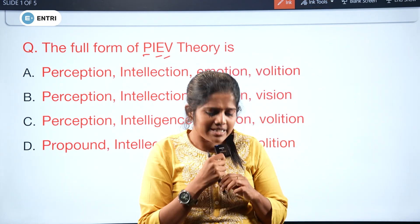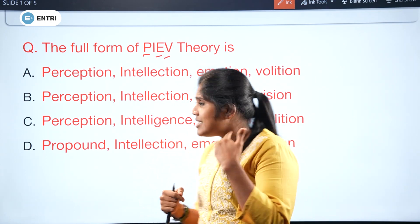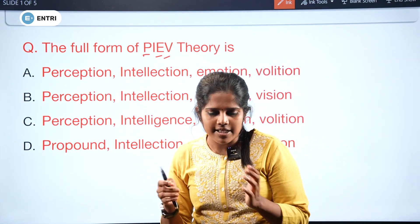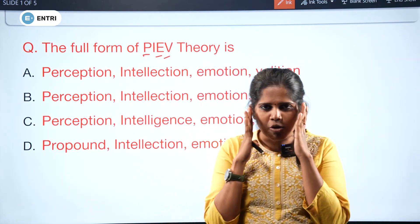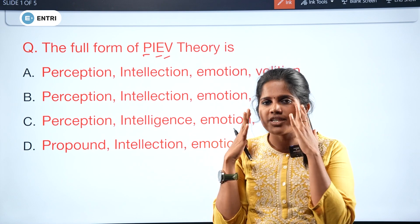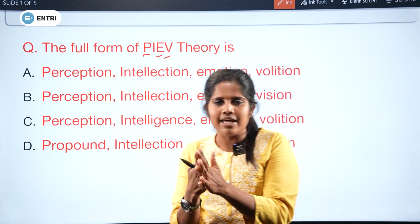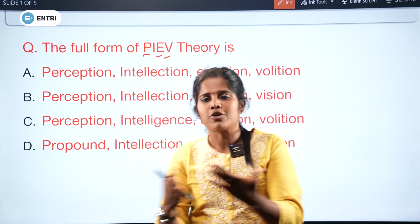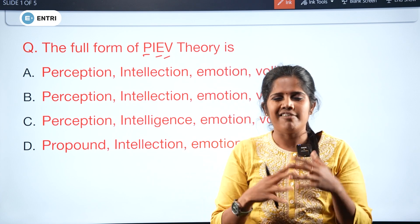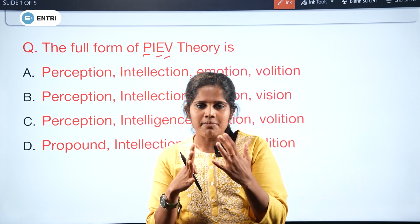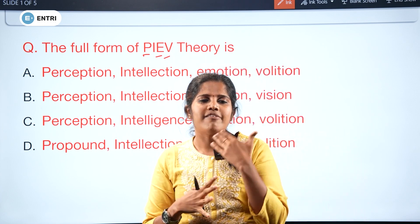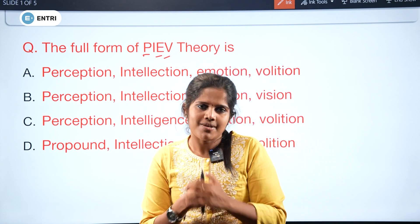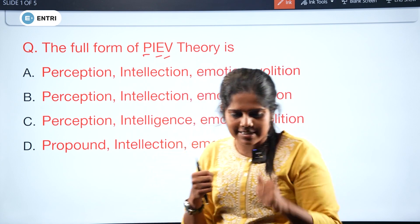The stopping sight distance calculation uses PIEV theory. PIEV theory applies when a driver encounters an obstruction on the road. One obstacle in the way — that is the direction of travel — and this is a way of calculating stopping sight distance.